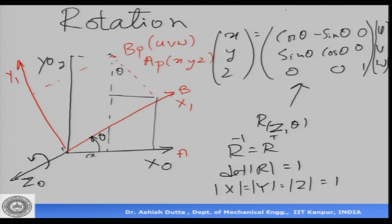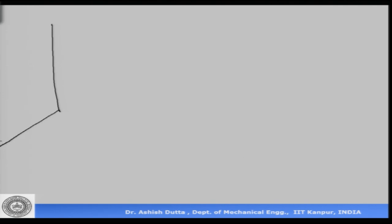This rotation matrix gives us the relationship between coordinates of a frame expressed in a rotated system and those in the reference system — essentially the relationship between frame A and frame B. Now, in the two-link manipulator system, we can have both a rotation and a translation.